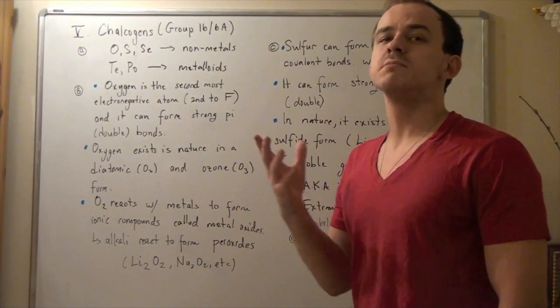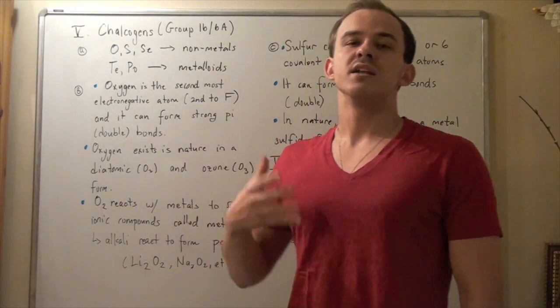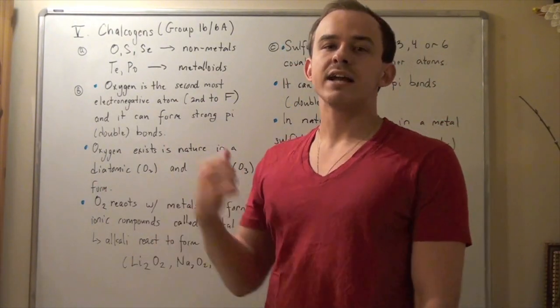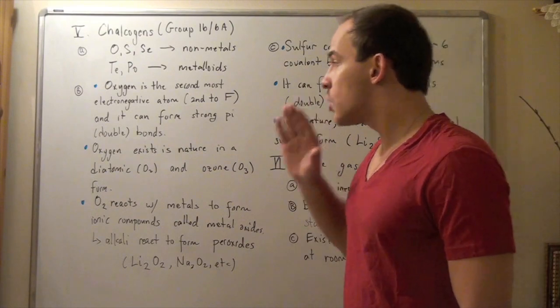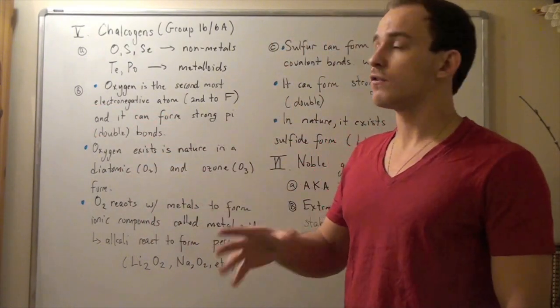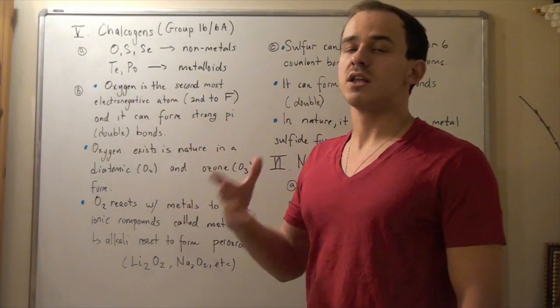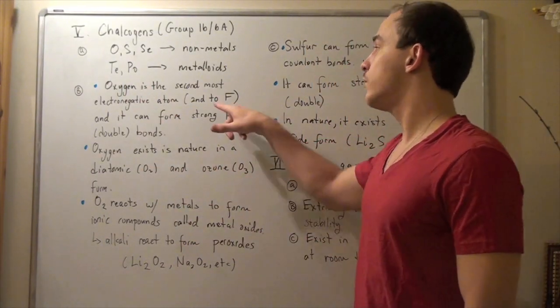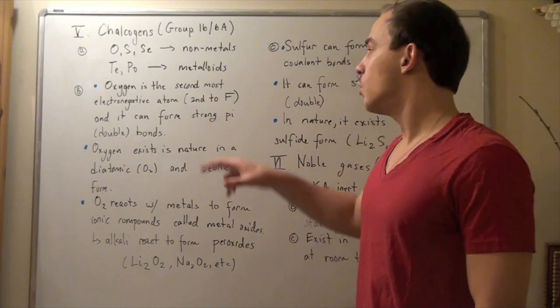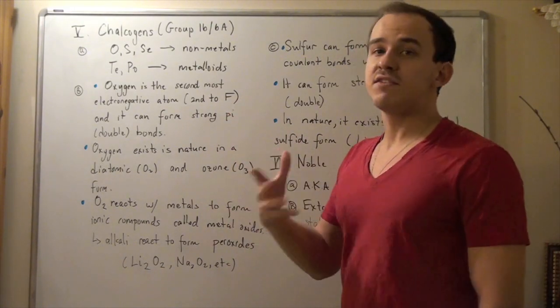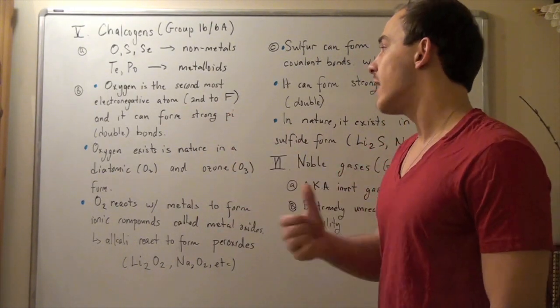Oxygen is the second most electronegative atom. In other words, it likes to take electrons. We'll talk more about electronegativity in a future lecture. For now, it's sufficient to say that oxygen is the second most electronegative, second to fluorine. We'll talk more about fluorine when we discuss the 7A group elements, or the halogens.